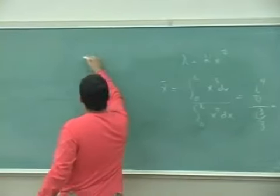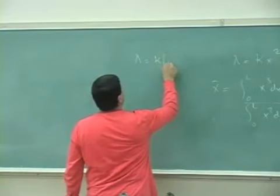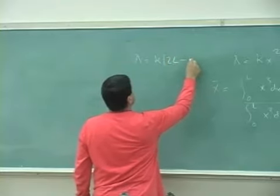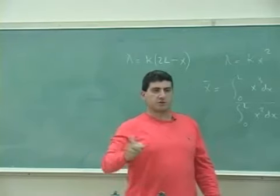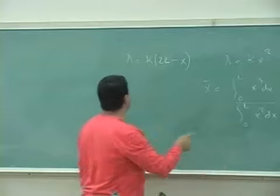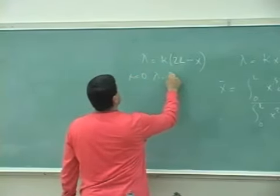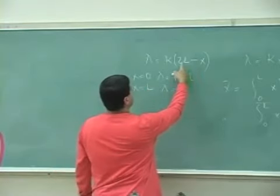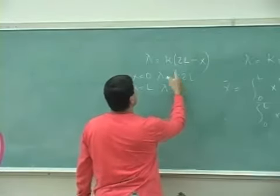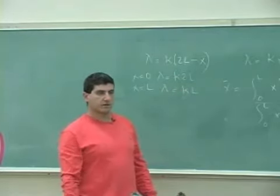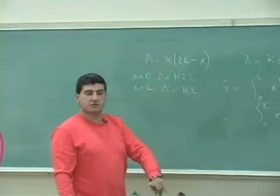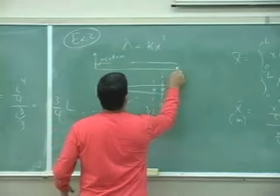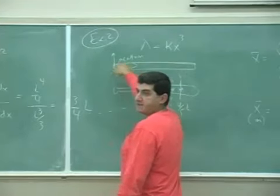How about something like this? Lambda is equal to kappa, let's say something like this, 2L minus x. In other words, when x equals to 0, the density is what? Kappa 2L, and when x equals to L, what's the density? The density function. When x equals to L, 2L minus L is L, right? So they'll be kappa L, right? So in other words, this is linearly decreasing function. So it's something like this. It's made of material that has some kind of density here. And over here, the density is half as that, you see?